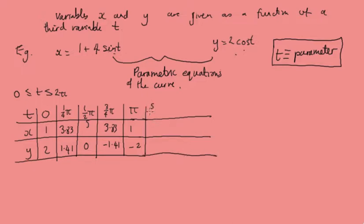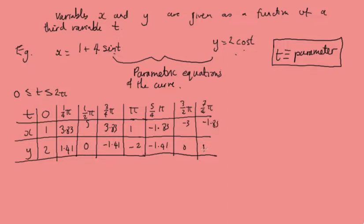When t is 5 over 4 pi, we get x equals minus 1.83 and y equals minus 1.41. When t is 3 over 2 pi, x is minus 3 and y is 0. At 7 fourths pi, x is minus 1.83 and y is 1.41. And when t is 2 pi, x is 1 and y is 2. You're literally just plugging the values of t into your calculator to get x and y, and you build this table.